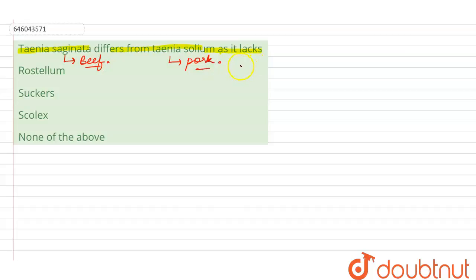Now, in case of Taenia solium, which is found in the small intestine of human beings because it is the primary host and its larva is found in the pig, which is the secondary host. So, man is the primary host, pig is the secondary host.